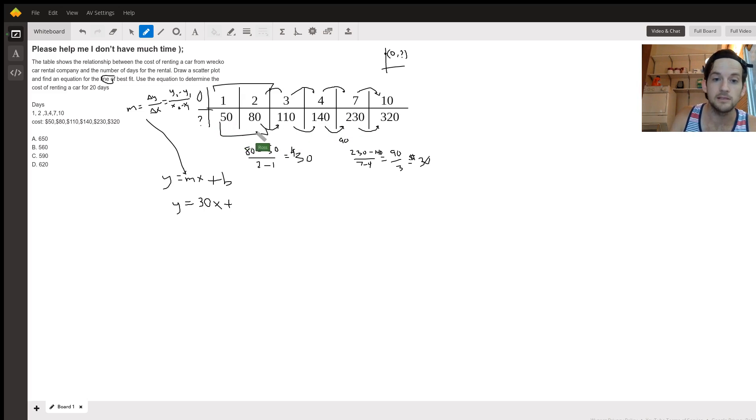Well, if we just think about this pattern we have, where we're adding $30 every day, to get back to zero days, that means we would have to pay $20. Subtract 30, and you'd have 20 here for zero days.